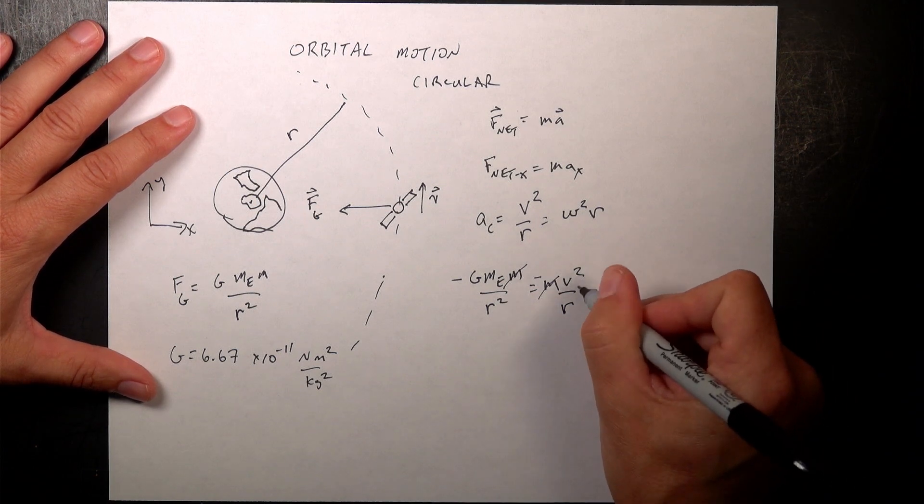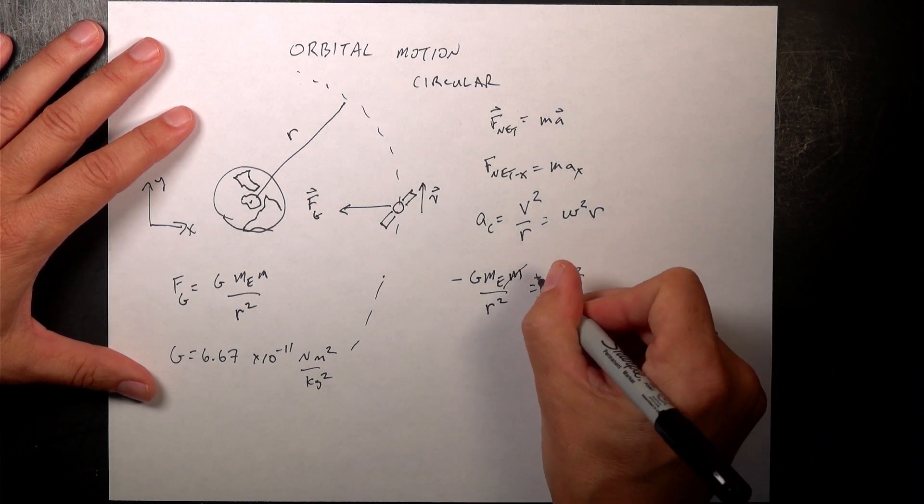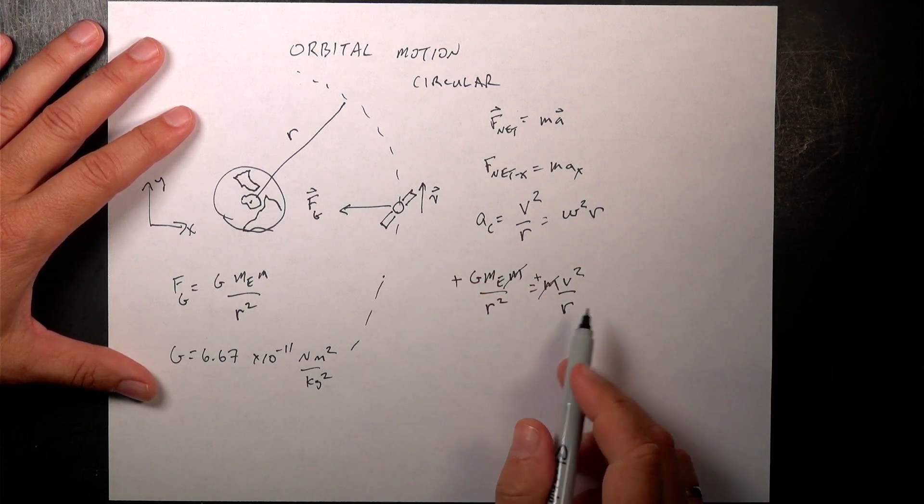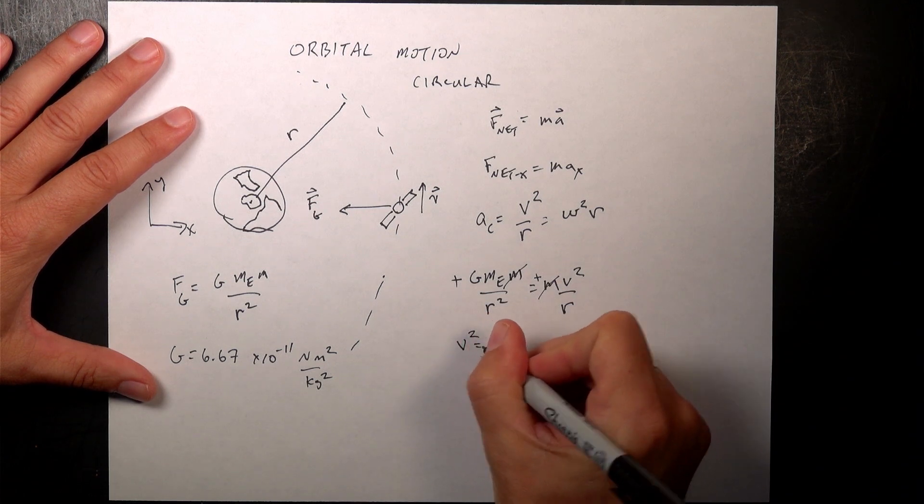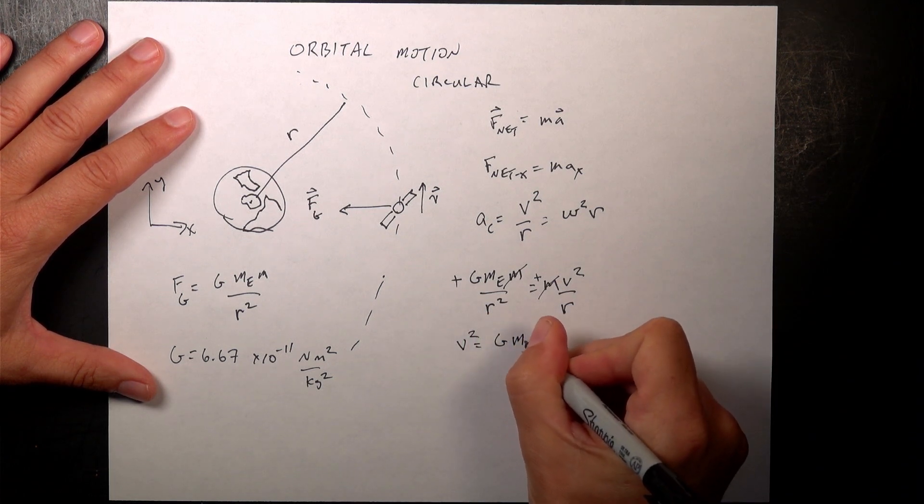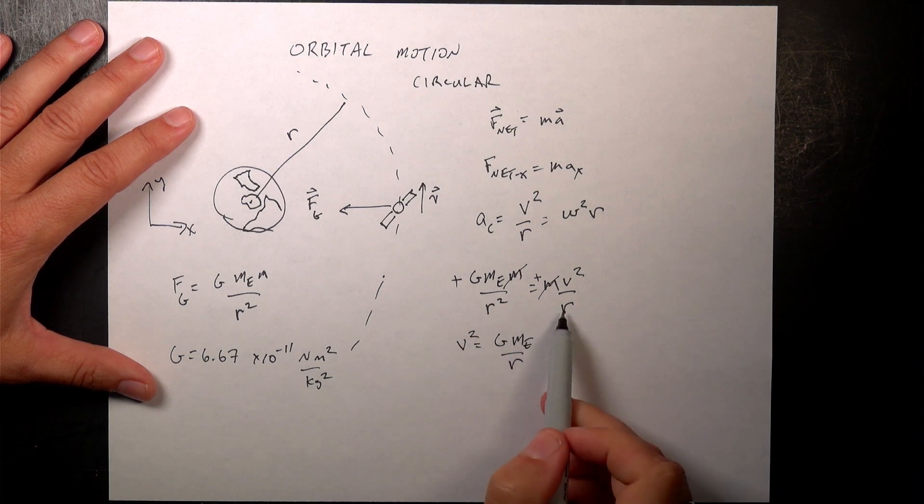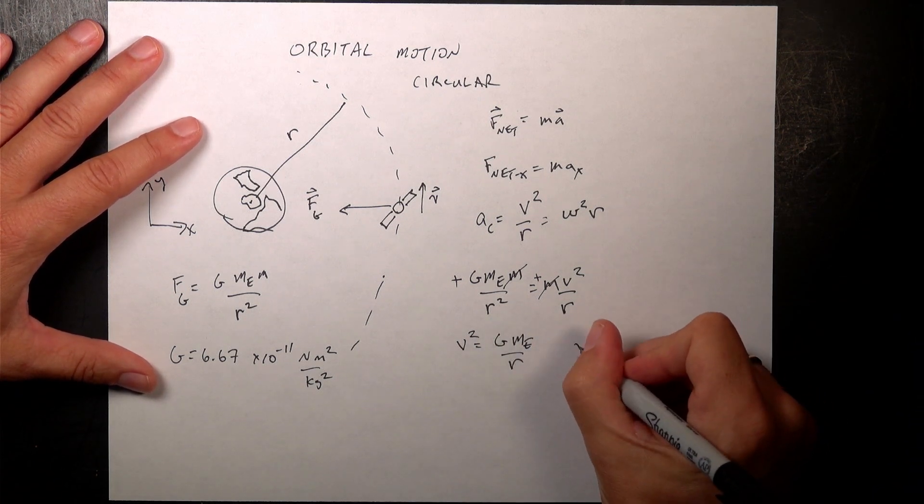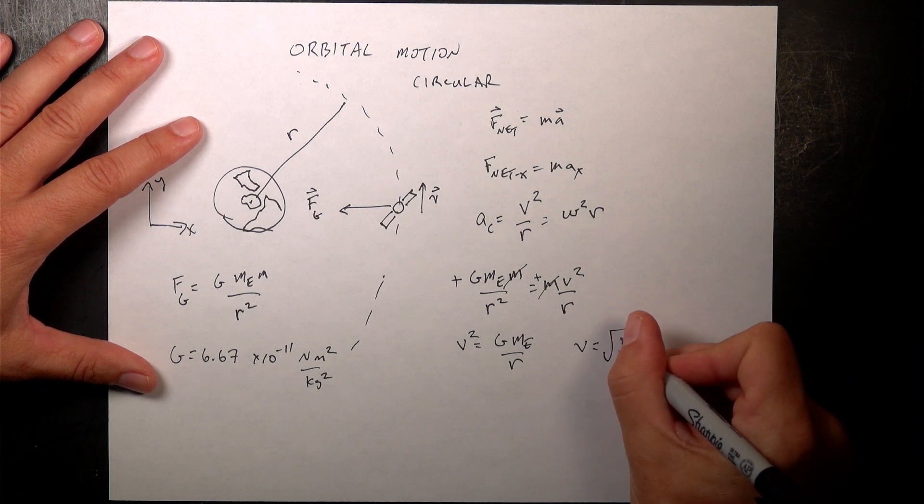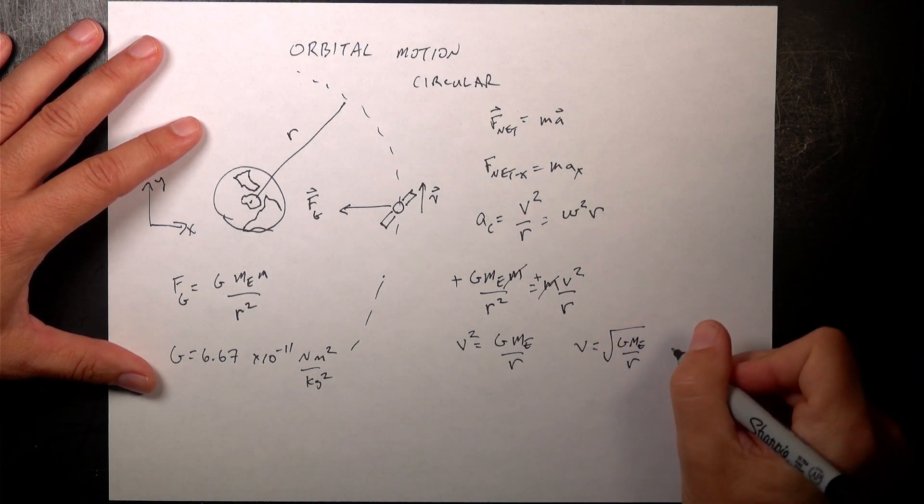Now, I can also multiply both sides by R. Oh, and the negative signs cancel too. I can multiply both sides by R and I get V squared equals G mass of the Earth over R. Because one of the R's, this R cancels and one of those cancels. And then I can take the square root. V is going to be the square root of GMₑ over R. And that's orbital velocity.